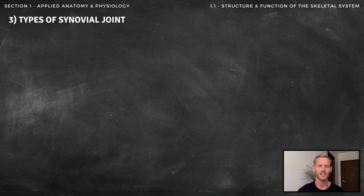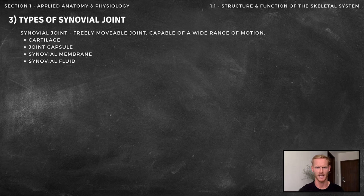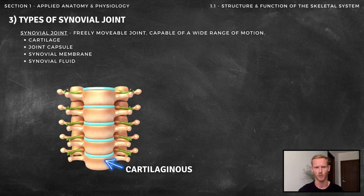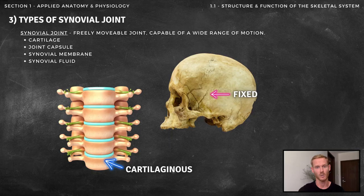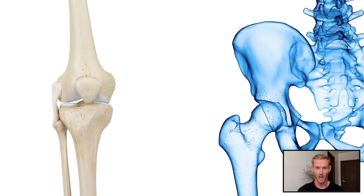Let's move on to the next section on synovial joints. A synovial joint is a freely movable joint, as opposed to cartilaginous joints, which provide limited movement, and fixed joints, which don't allow movement at all. Within a synovial joint, the bones are covered by cartilage and are surrounded by a tough, fibrous joint capsule. The joint capsule is lined with a synovial membrane, which secretes synovial fluid, lubricating the inside of the joint.